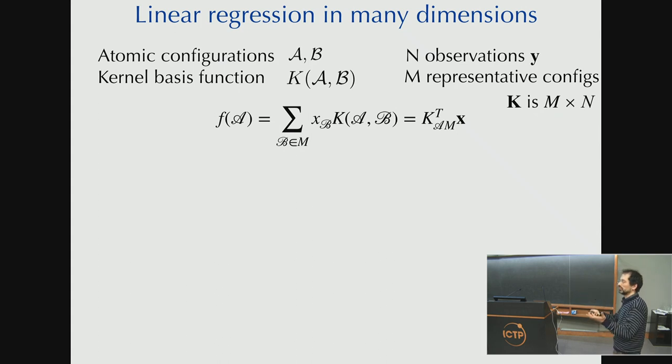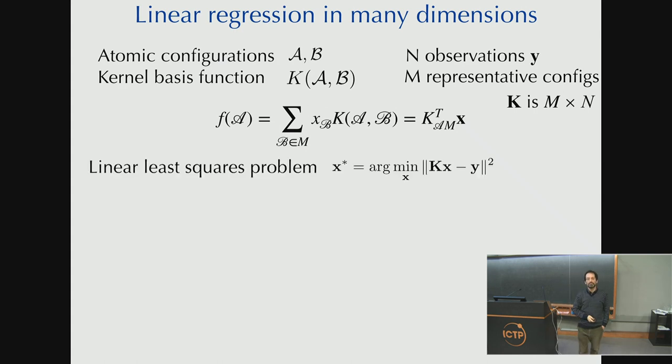And this K is a row of a K matrix that is M by N. So it's essentially, it's also called the design matrix. It's all the basis function values connecting the representations, connecting the observations and the representative configurations. So this is an easy problem to solve for the unknown coefficients. It's a linear least squares problem. You're looking for the best fit. So KX should equal Y. It's not going to equal it exactly, but I'm looking for the unknown coefficients X, which minimize the error.